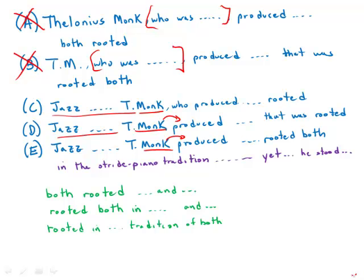That leaves us with C, D, and E. So now I'm going to focus on this troublesome word, both. Both comes before the first term of two parallel terms that we're joining. So both X and Y. That means that we're considering X and Y together. If I have both rooted, it's coming before a verb, that implies that there's going to be some other verb in parallel to rooted, both rooted and something else. That's not what we mean here.